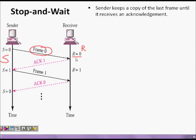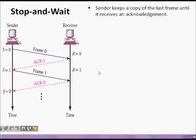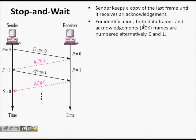When the receiver receives frame zero, it makes r equal to one and sends ACK 1. ACK 1 here means the sequence number of the next frame it expects. So s now has to send frame one, and s becomes one. The receiver then receives frame one, makes r equal to zero, and sends ACK 0, meaning the next expected frame should be frame zero.